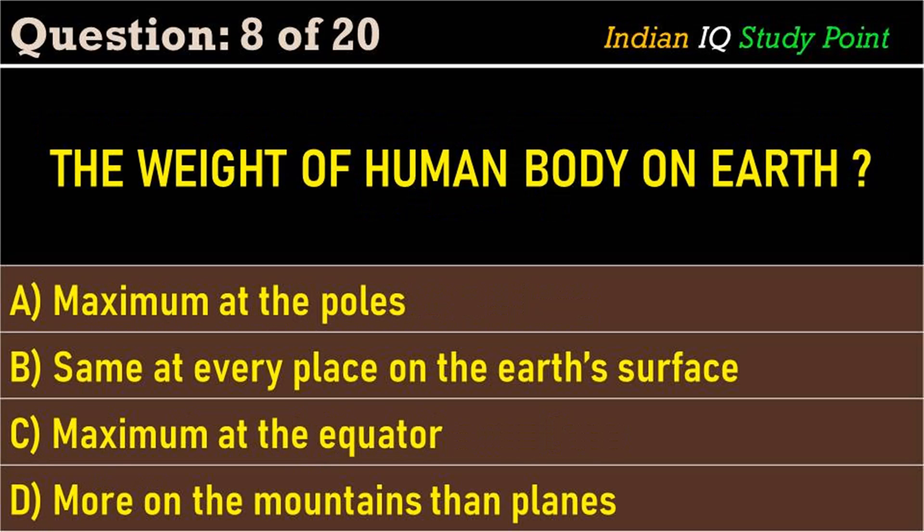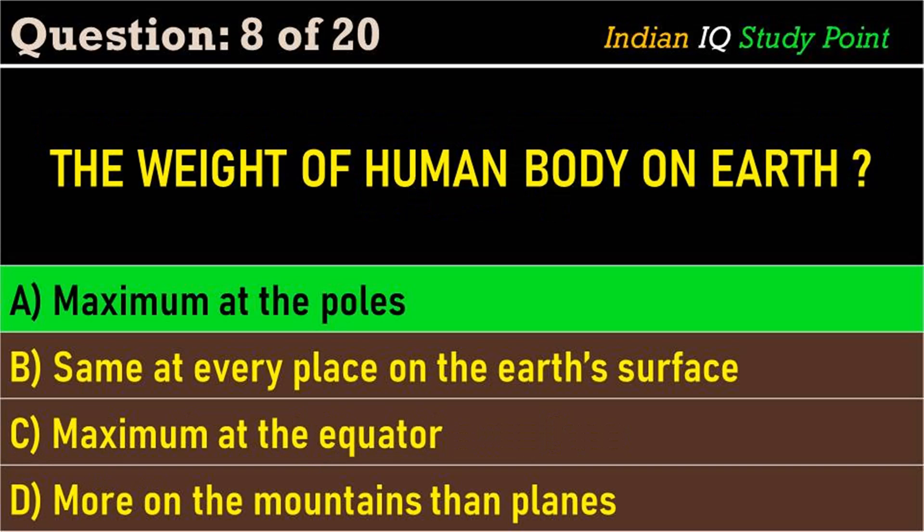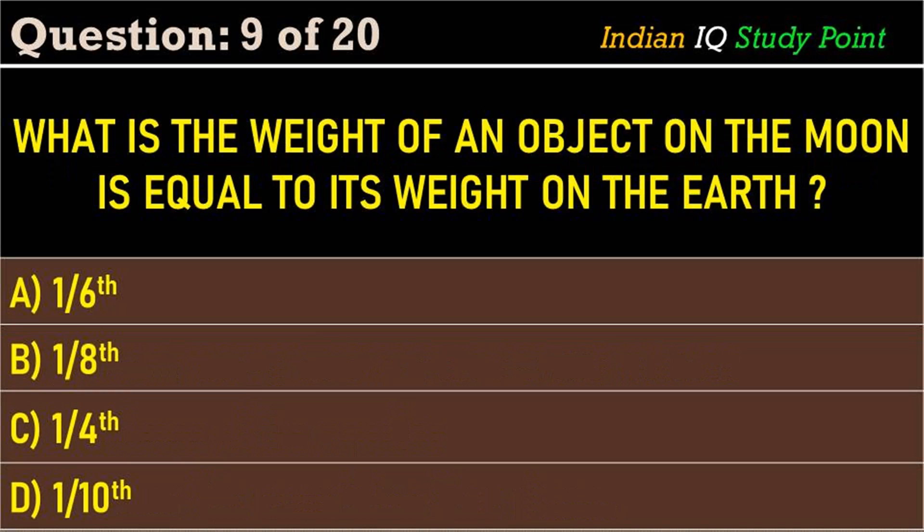Coming to the next question: what is the weight of a human body on earth? Option A: maximum at the poles. Option B: same at every place on the earth's surface. Option C: maximum at the equator. Option D: more on the mountains than on planes. The correct answer is option A: maximum at the poles.